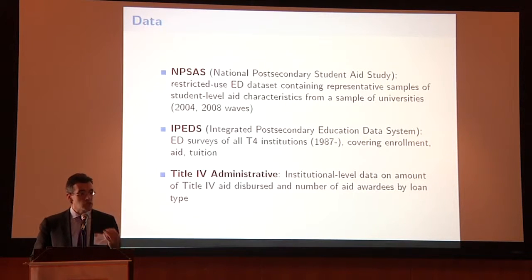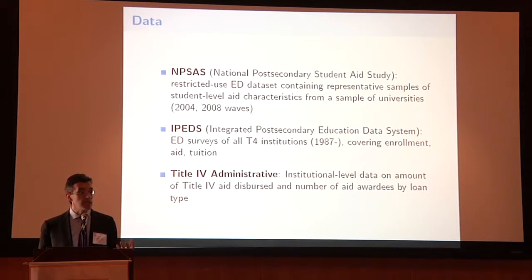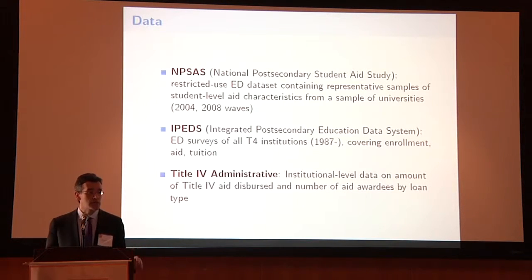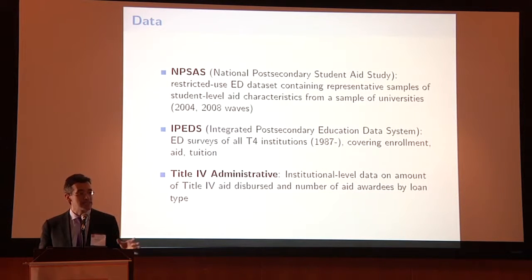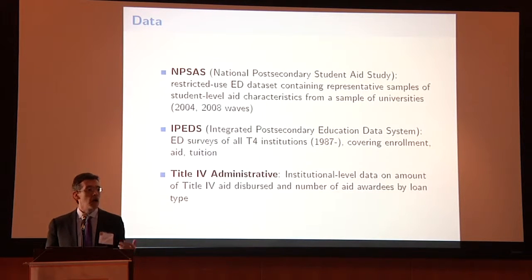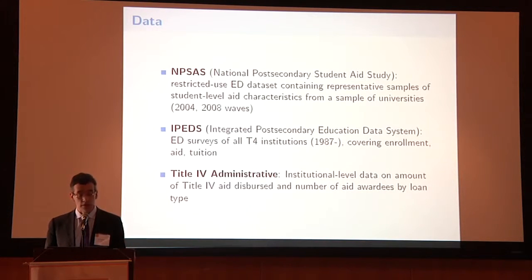We obtain data from the Department of Education's restricted-use NPSAS data, which every four years samples the student population with detailed financial information. Since this data only comes every four years, we sort universities based on their exposure to these policies as of 2004, predating all our policy changes, and also as of 2008 in the paper. We use separate data sources to measure sticker tuition — I'll explain why sticker and not net tuition — and Title IV data for loan amounts. IPEDS data also has loan amount information but it is survey-based, so we prefer Title IV data, although it aggregates both graduate and undergraduate students over our sample.